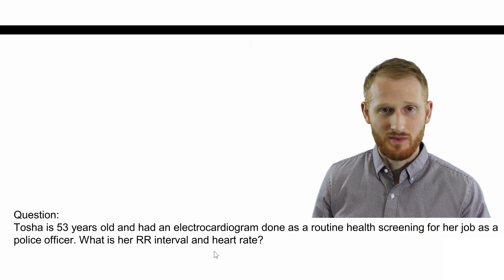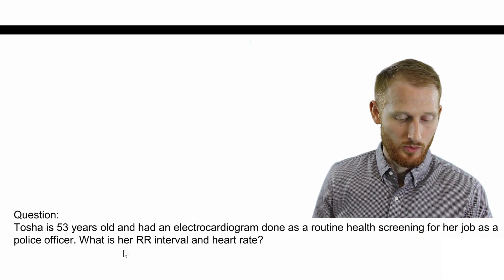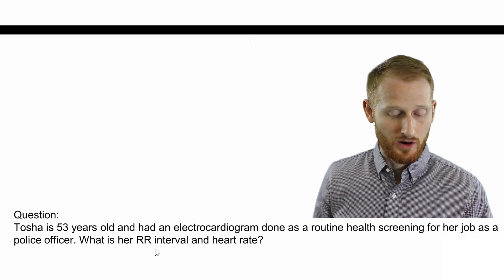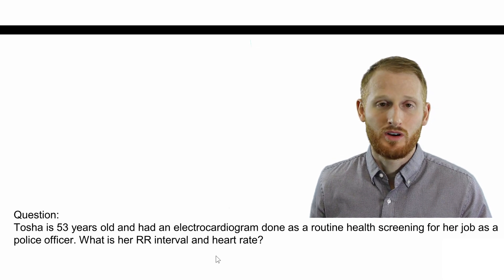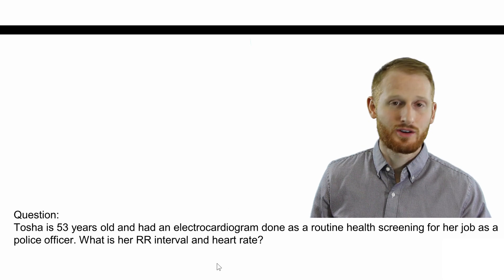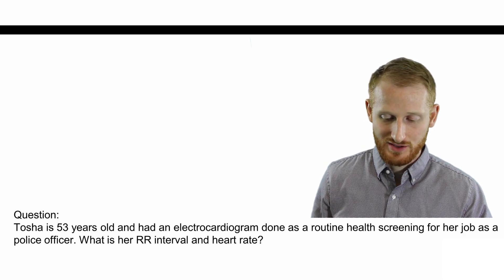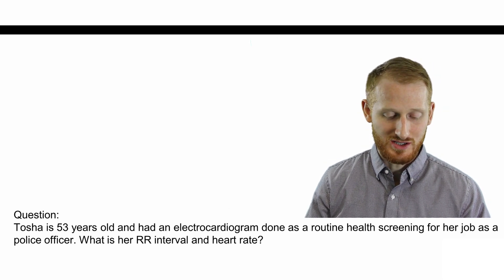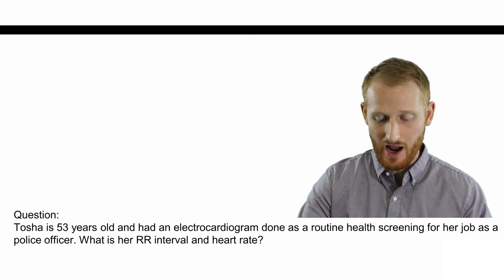We want to know what her heart rate is, because she wants to know what her heart rate was. We need to calculate R-to-R interval in order to get heart rate first. There are other ways of getting heart rate from ECGs, but this is the most accurate.